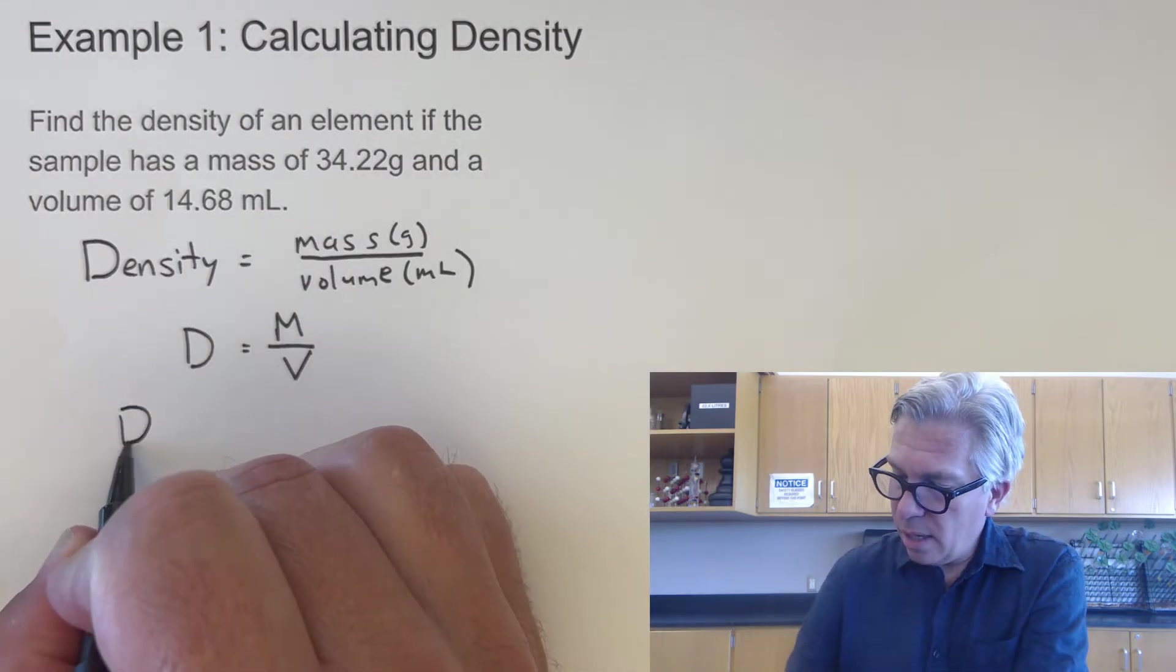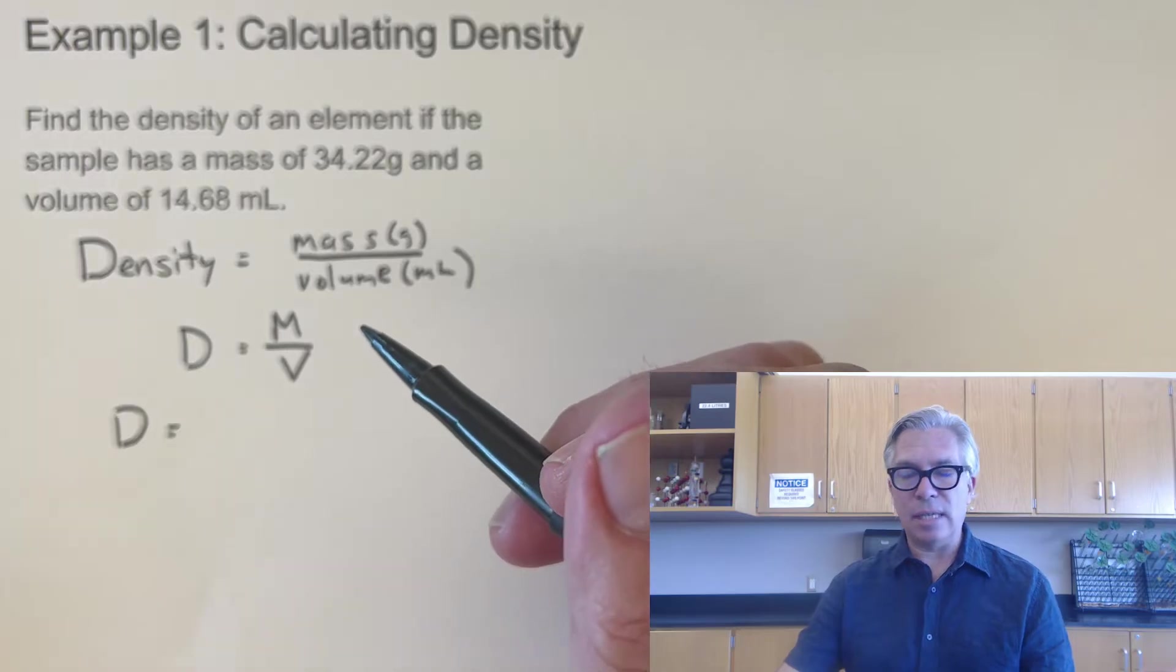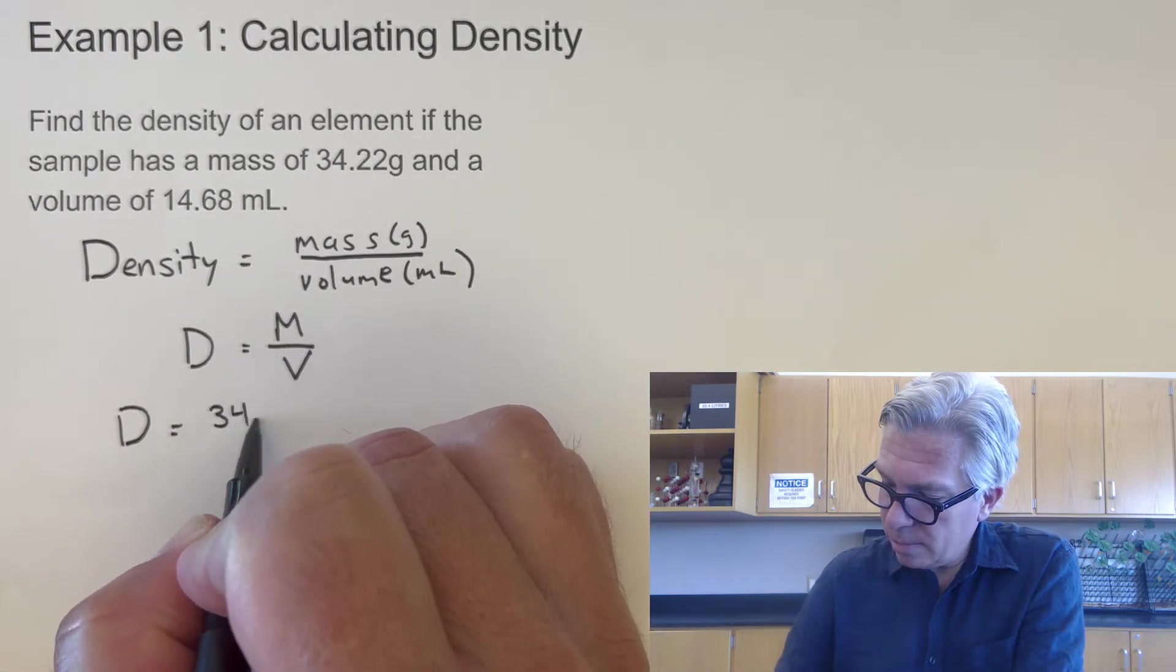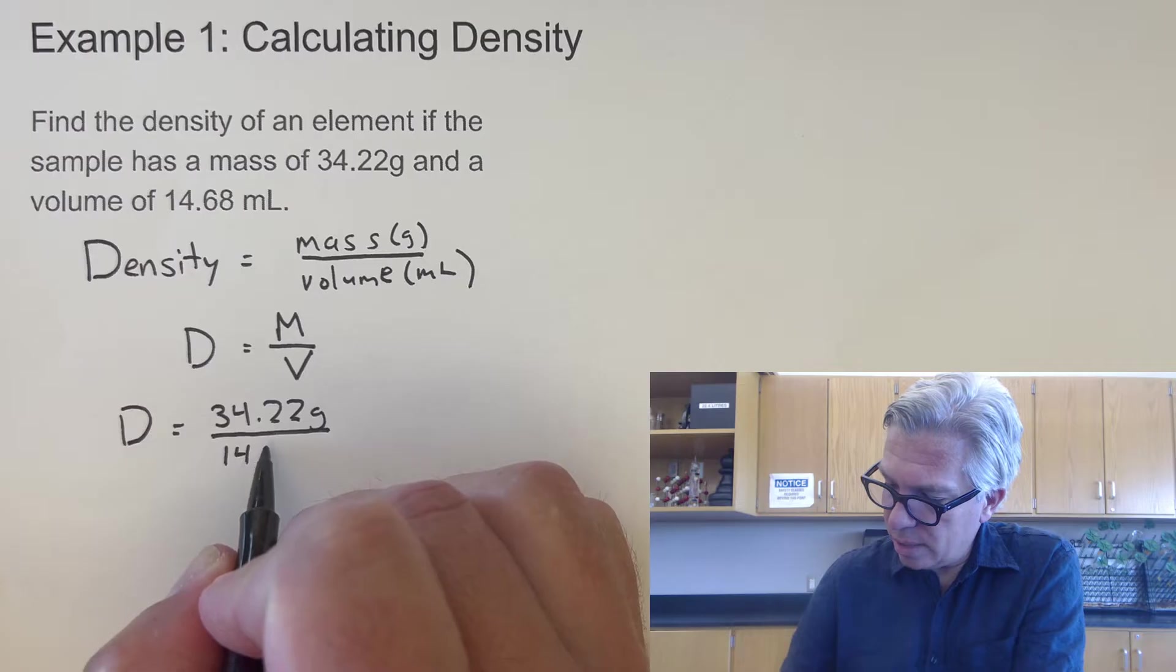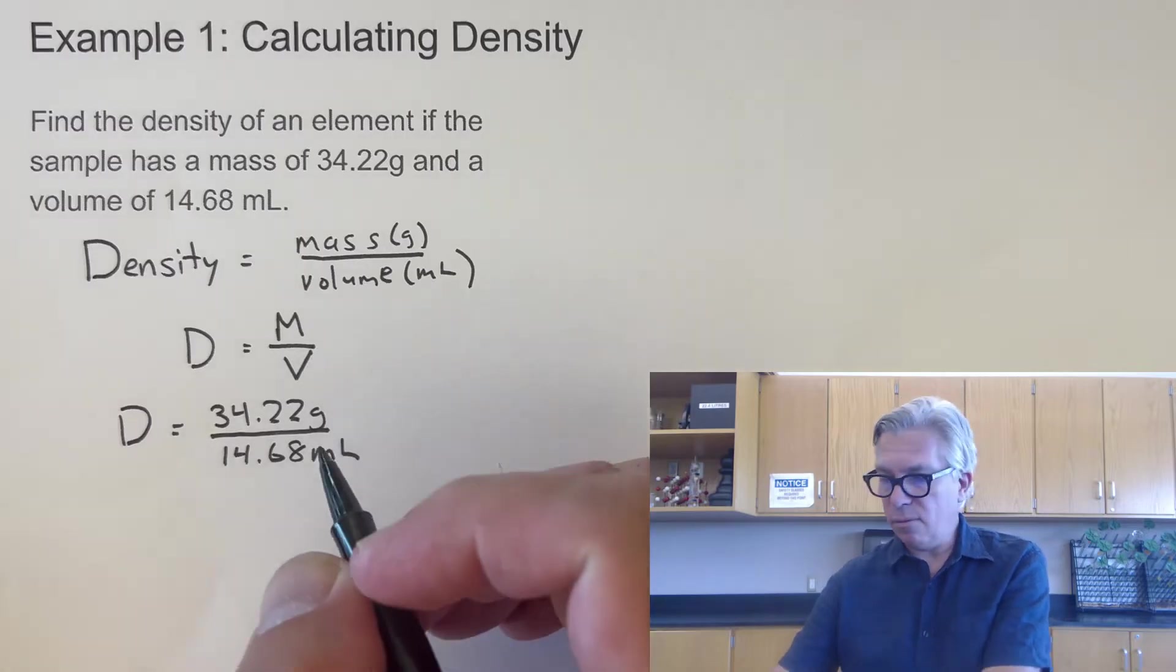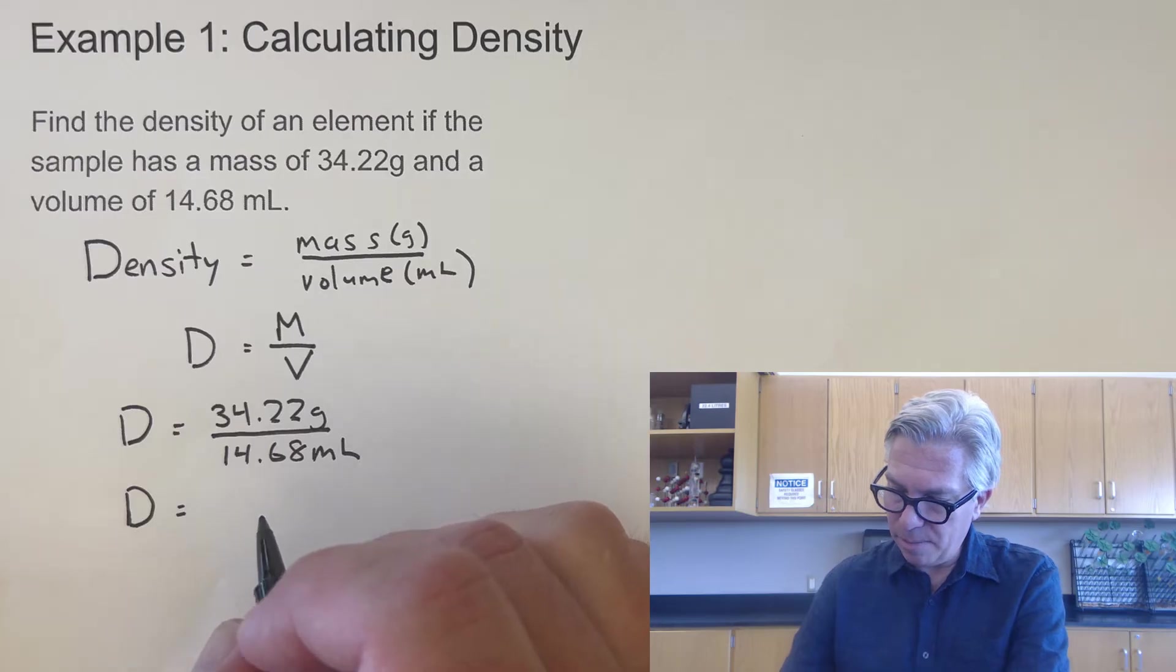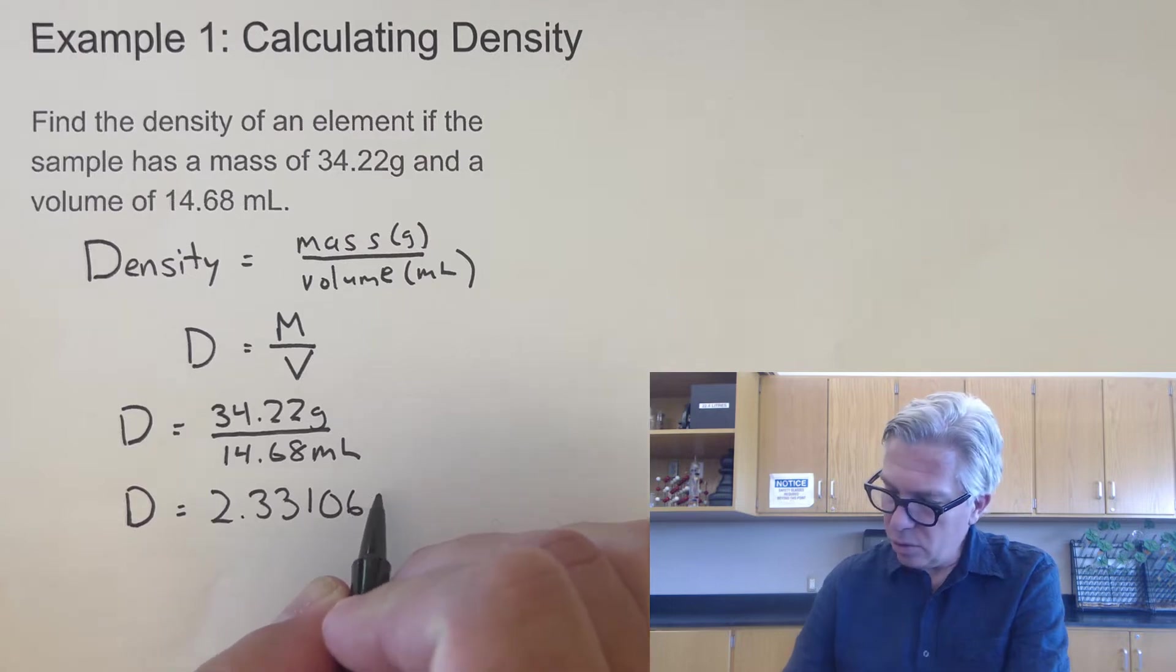So D, we'll solve for that. I always tell my students, if you're using an equation, to write the blank equation. Just put it on your paper. It takes only a second, but it allows anyone reading your work to immediately know what you're doing. So density equals the mass, 34.22, and then you substitute in that sample. And then we substitute in the volume, 14.68 milliliters. So notice we have two different units, grams per milliliter, and those will end up being the unit for density. So when I do this calculation, take 34.22 divided by 14.68, my calculator gives me this number, 2.33106267.